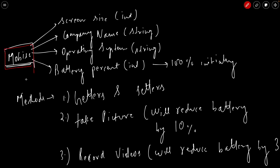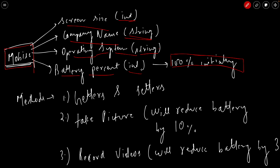First of all, we'll have a class called Mobile. This mobile will have a few properties: screen size (an integer value), company name (a string value), operating system (also a string value - Android, iOS, Windows, etc.), and battery percentage (an integer value). Initially the battery is 100 percent. While creating the instance of Mobile, only these three properties should be in the constructor: screen size, company name, and operating system.